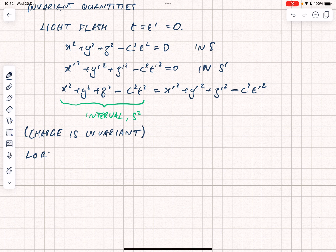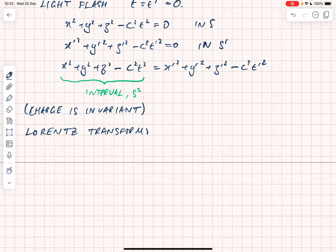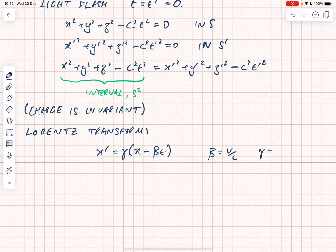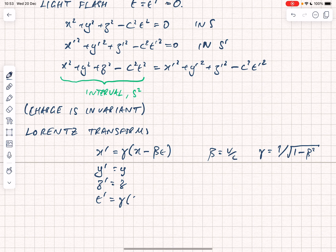And the Lorentz transforms for the two frames we defined, s and s prime, are given by x prime is equal to gamma into x minus beta t, and beta is given by v over c. Remember that s prime is moving with velocity v relative to s along the x direction. And gamma is 1 divided by the square root of 1 minus beta squared. We have that, sorry, let's put y in before z. y prime is equal to y, z prime is equal to z, and t prime is equal to gamma into t minus beta x over c squared.